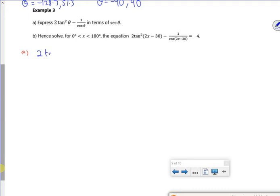So I've got 2 tan²θ minus 1 over cos θ. So I know that... What have they done here? Hang on, I'm going to pause. I don't know what they've done. Oh yeah, I got it. Right, so we're going to change the tan squared into the secant squared minus 1.